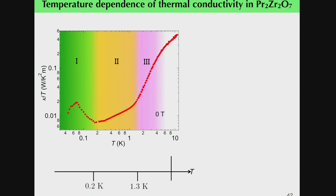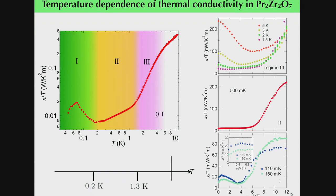There are characteristic temperature dependences, and we can divide the data into three regions: one, two, and three. The field dependence of thermal conductivity also shows characteristic behavior. In region three, thermal conductivity decreases with increasing temperature, while it is almost constant in region two. In region one, thermal conductivity increases with increasing magnetic field. This may reflect different quasi-particle excitations in these three temperature regions.